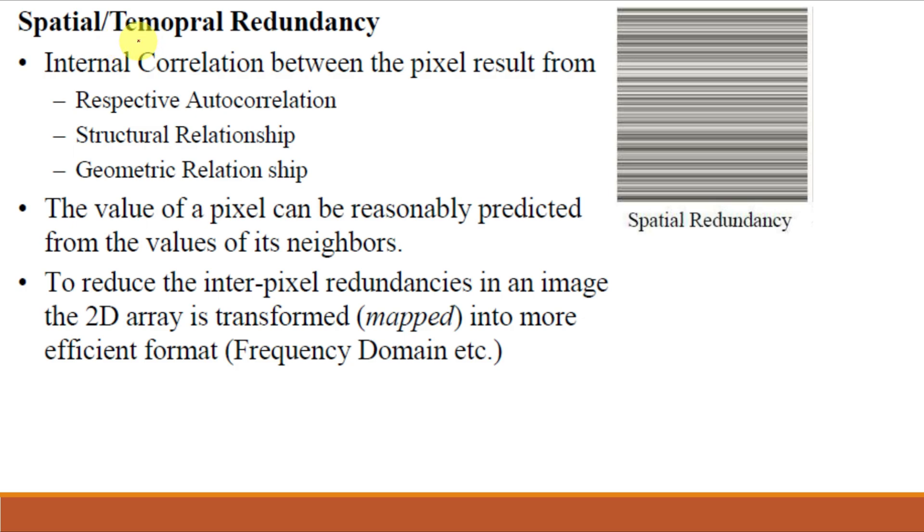Next is interpixel redundancy or spatial or temporal redundancy. As the name suggests, spatial redundancy means redundancy present on the image plane itself. Temporal means redundancy present with time, with different time frames. Most of the information between video frames has the same information which is redundant. Say for this image, the first line is black with intensity 0 and the second line is white with intensity 255. Rather than sending 0 again and again for the first line, it can be sent once.